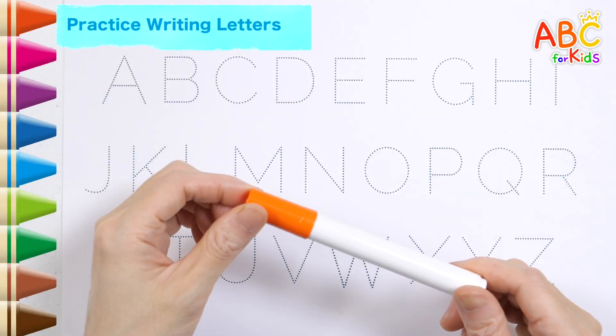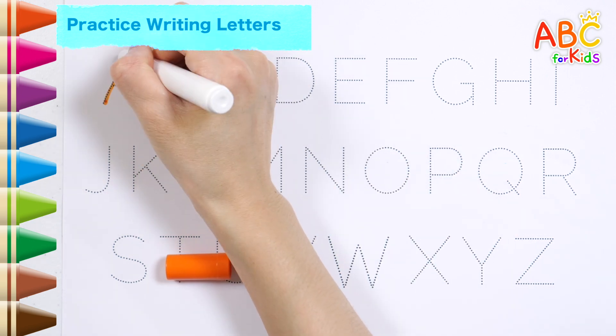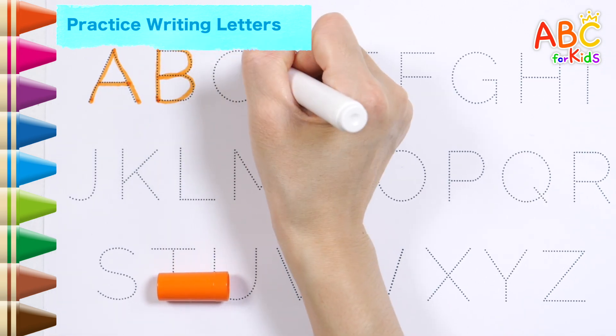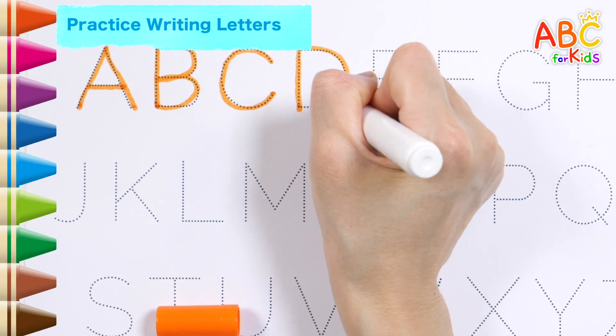Shall we write from A to Z along the dotted line with an orange pen? A. The wheels on the bus. B. C. D.